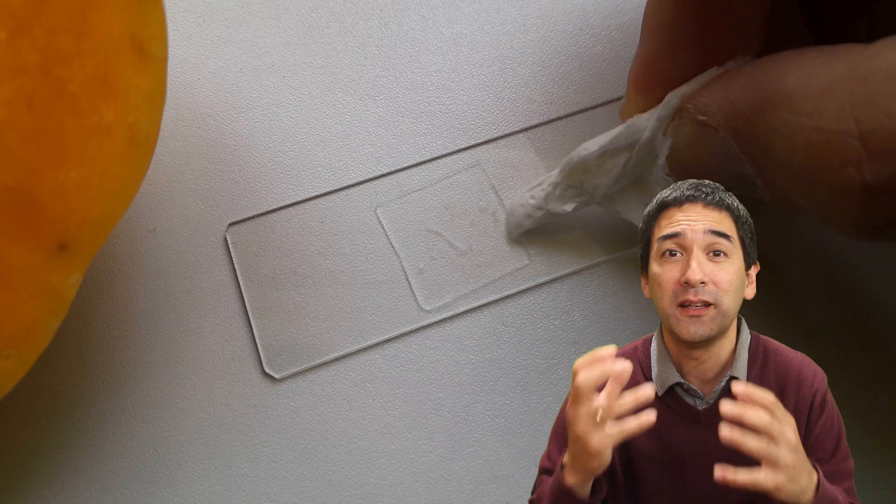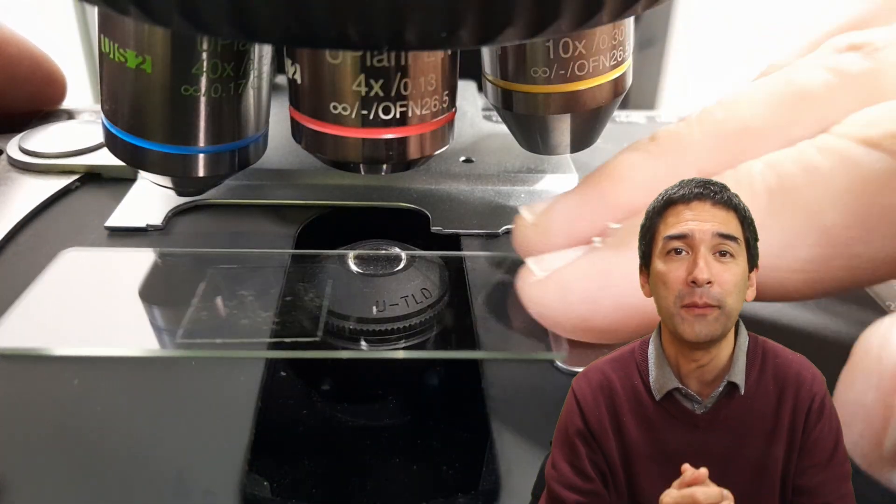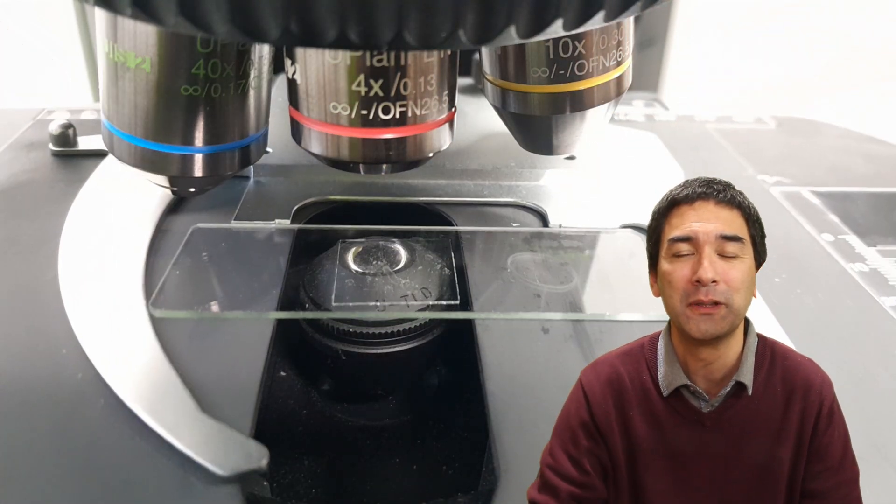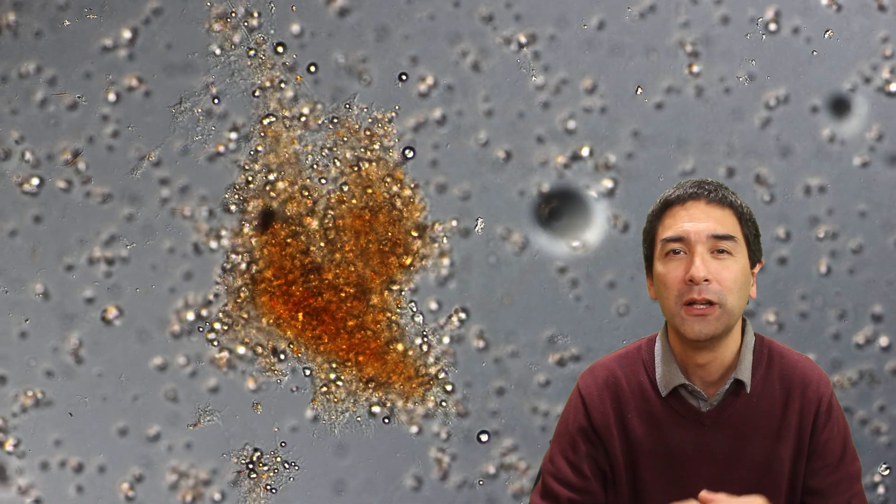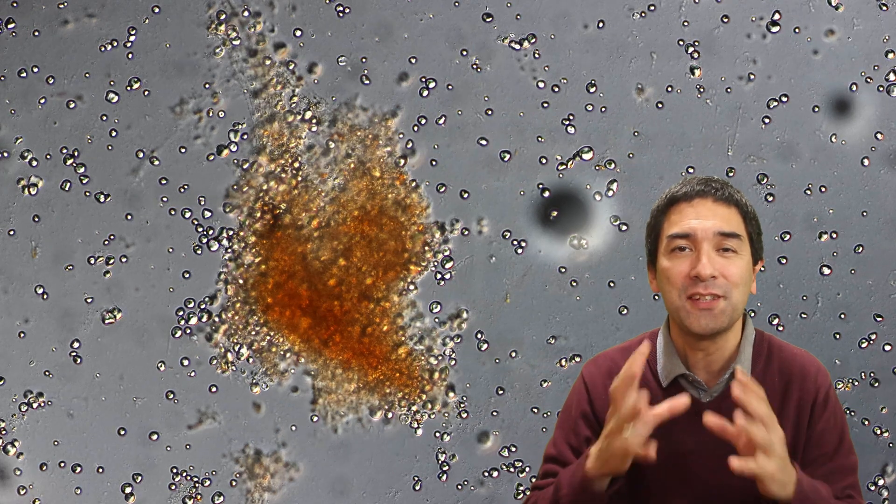This is now my microscope. Everything goes on the stage of the microscope, and then I had to really go up with the magnification quite a bit. I also had to turn up the light, and look, this is what I found. Look at this: thousands and thousands of those tiny little dots.